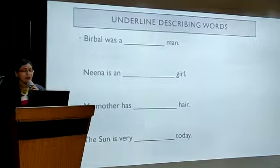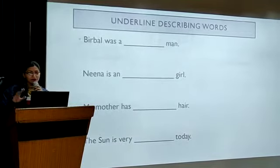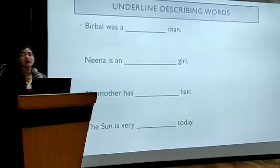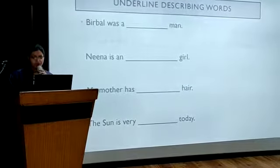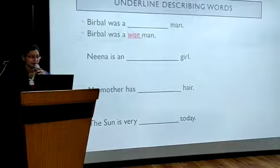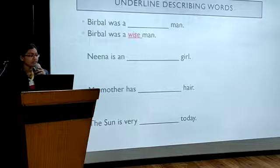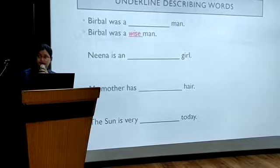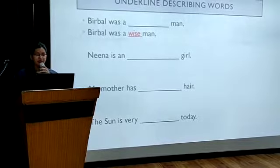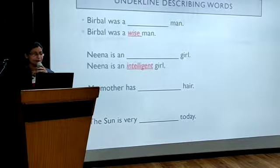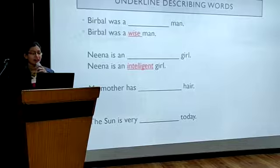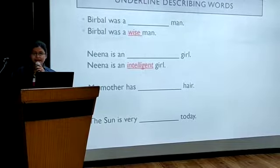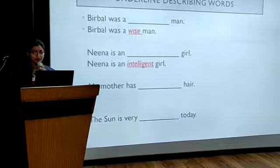Be-able was a dash man — you have to fill in the blanks with the correct describing words. Correct — Be-able was a wise man. Second: Nina is an dash girl. Very good — Nina is an intelligent girl. My mother has dash hair. My mother has long hair.